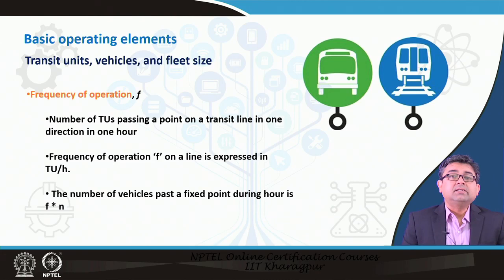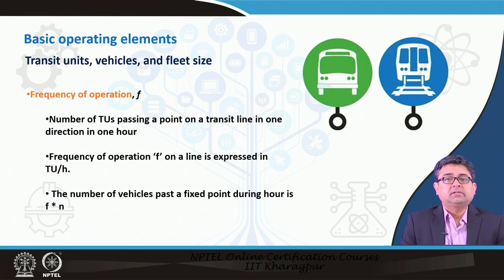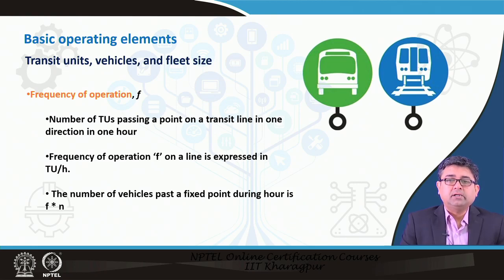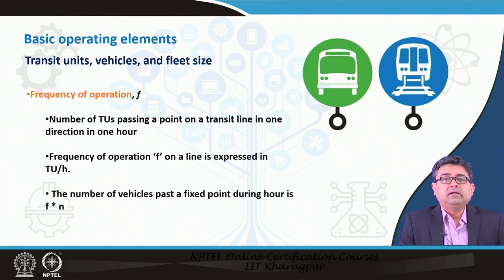Next is the frequency of operation. Passengers are always interested in frequency — we always want to know when the next bus or metro rail is coming. Frequency is defined as the number of transit units passing a point on a transit line in one direction in one hour, expressed as TU per hour. The number of vehicles passing a fixed point is F times N.